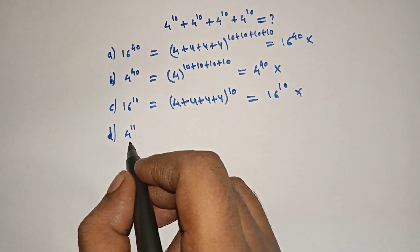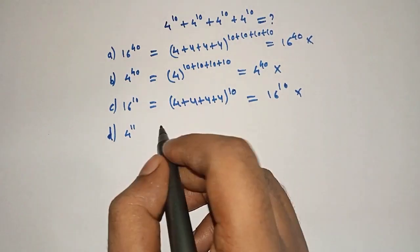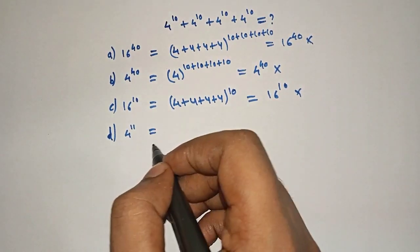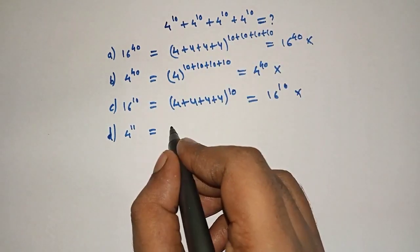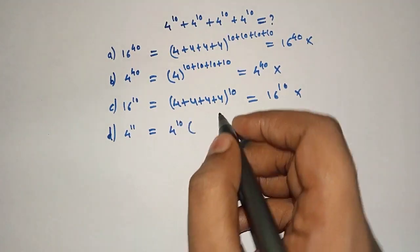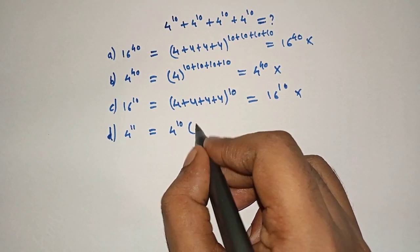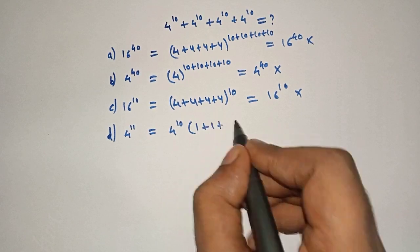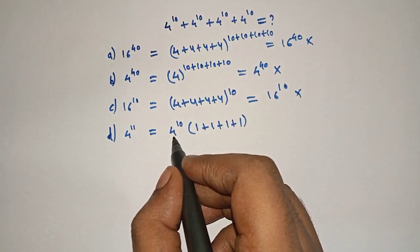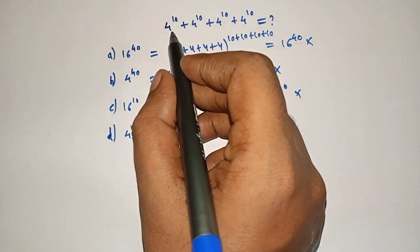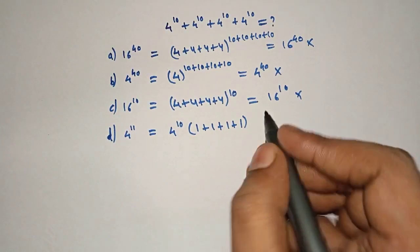Let's check 4 raised to 11 — this will probably be the answer. We can take 4 raised to 10 as common from all four terms. Under the bracket, what remains is 1 plus 1 plus 1 plus 1, because we have taken 4 raised to 10 as common from each term.